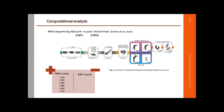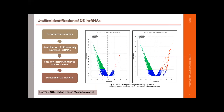We started our work by performing a wide computational analysis. We analyzed RNA sequencing data produced by the group of Omar Akbari at San Diego University — RNA-seq data from ovaries before and after a blood meal. We used non-blood-fed ovaries as our control, and then we had six samples from ovaries post-blood meal at every 12 hours, so we could analyze the transcriptome and identify long non-coding RNA genes that were differentially expressed after a blood meal.